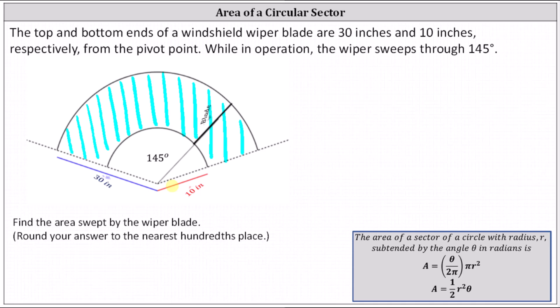Recall the area of a sector of a circle with radius r subtended by the angle θ in radians is given by θ divided by 2π times πr².